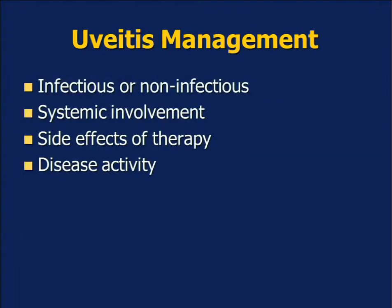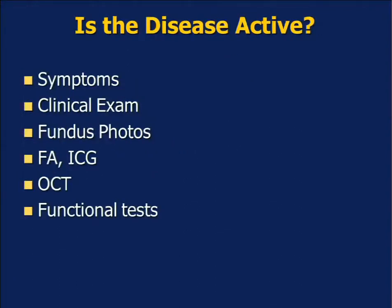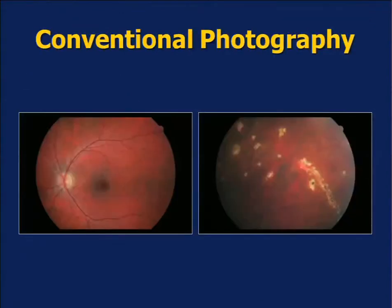Uveitis management often requires us to know whether the etiology is infectious or non-infectious, whether there is systemic involvement, whether there are any side effects of therapy, and certainly to assess disease activity, which we use to treat our patients and determine the next course. When we ask the question of whether disease is active, we follow certain guidelines and use certain clues from symptoms, clinical examination, fundus photograph, fluorescein angiography, and other modalities.